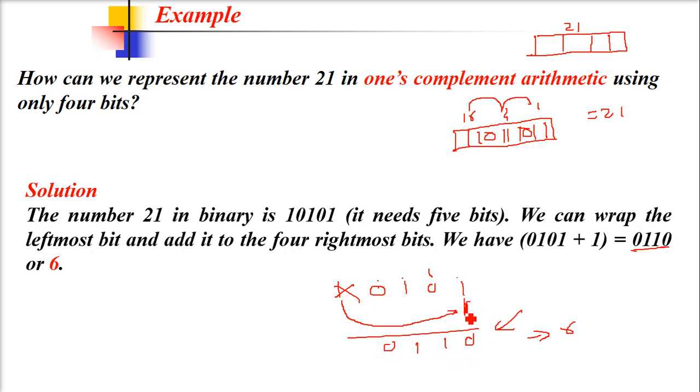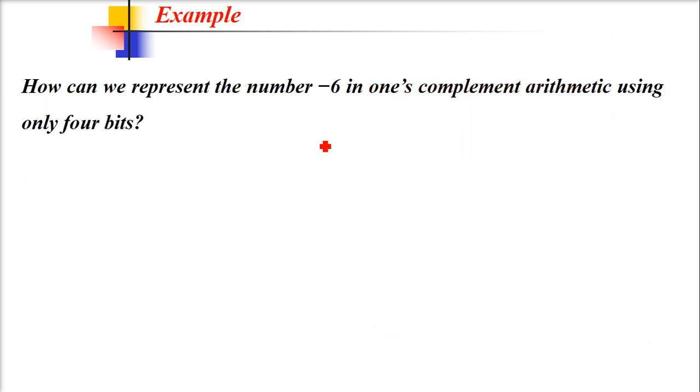For the checksum, we have to complement it—do one's complement. This becomes 0 to 1, 1 to 0, 1 to 0, 0 to 1. This is 1 and 8, so 8 plus 1 equals 9, which is our checksum. For sending 21, the checksum will be 9.